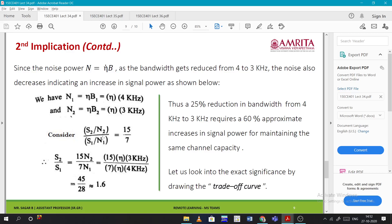He found N₁ and N₂ and considered S₂/N₂ by S₁/N₁. We got S₂/S₁ as 1.6, meaning S₂ = 1.6 times S₁. That's a 60% increase. A 25% reduction in bandwidth from 4 kHz to 3 kHz requires a 60% approximate increase in signal power for maintaining the same channel capacity.